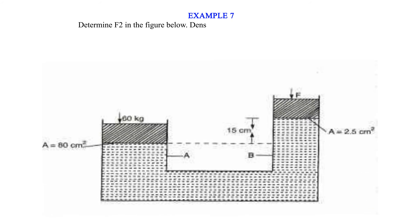Example 7: Determine F2 in the figure below. Density of the liquid equals 800 kilograms per cubic meter and G equals 10 newtons per kilogram. Pressure at A, PA equals pressure at B, PB.